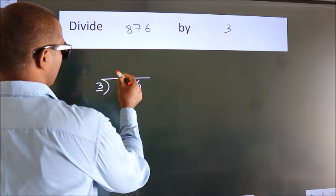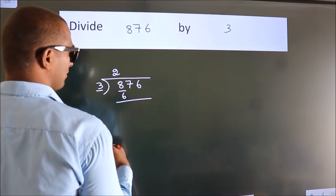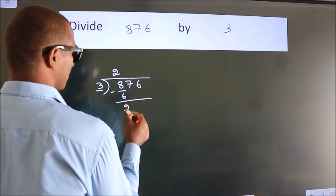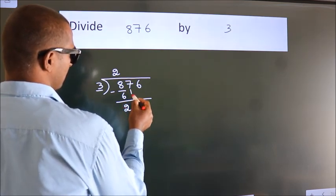3 times 2 is 6. Now we subtract and get 2. After this, bring down the next number.